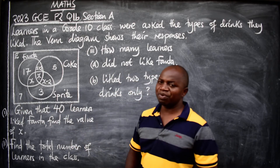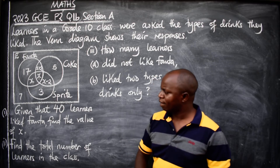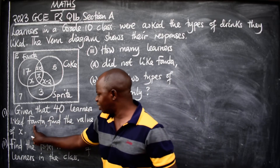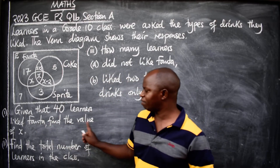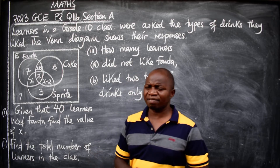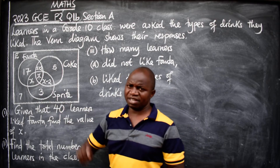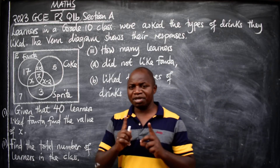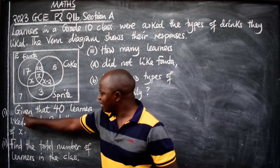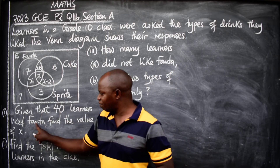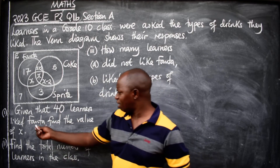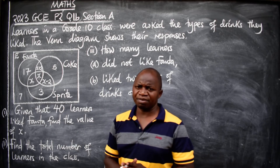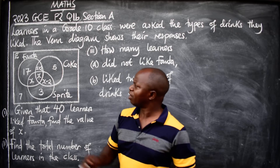Now let's proceed with the questions. The first one: given that 40 learners like Fanta, find the value of x. You need to know the value of x for other calculations. The information given is that 40 learners like Fanta — meaning the total for the Fanta circle is 40.